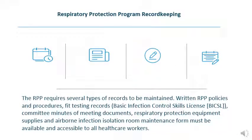Another strategy for effective implementation is respiratory protection program record keeping. The RPP requires several types of records to be maintained: written RPP policy and procedures, fit testing records, basic infection control skills, license committee minutes of meeting documents, respiratory protection equipment supplies and their inventory level, and airborne infection isolation room maintenance forms. All these documents must be available and accessible to all healthcare workers at all times.